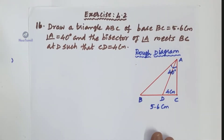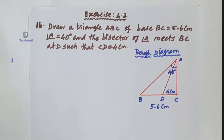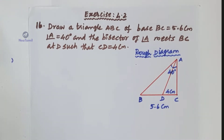Dear students, I am Kannan, your math teacher. In this video you will learn 10th Samacheer Maths Chapter 4 Geometry. The concept is construction of triangle. We are going to take the particular type: constructing a triangle when the base and the vertical angle and the point on the base where the bisector of the vertical angle meets the base are given — the bisector concept.